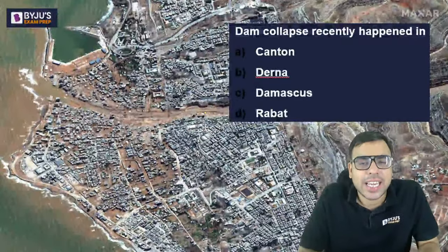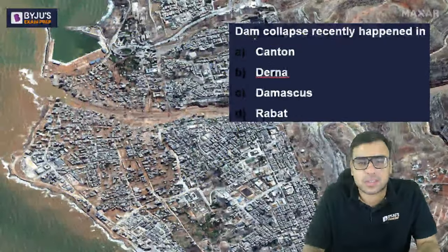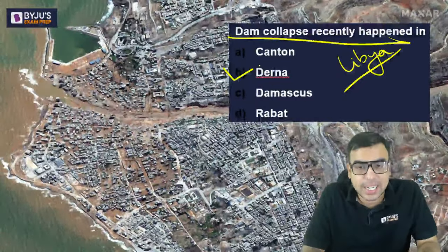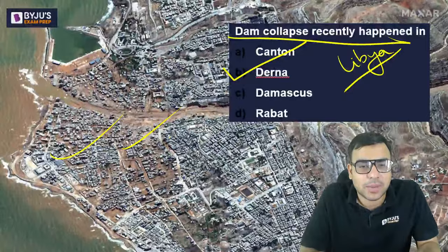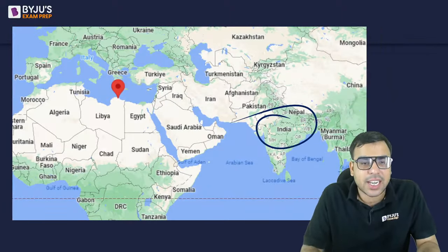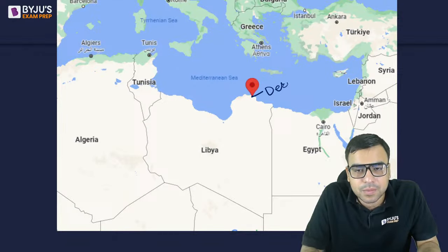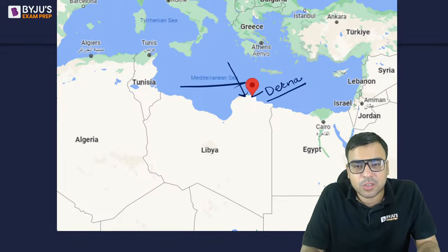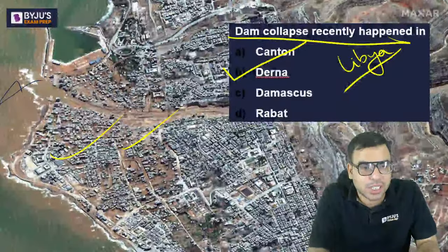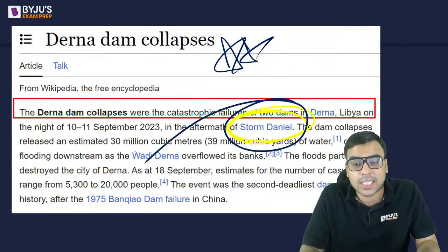A dam collapse recently happened in which city? Canton, Derna, Damascus, or Rabat? The right answer is B — Derna city in Libya. A storm called Daniel caused the dam collapse in Derna. Libya is in Africa on the Mediterranean coast. You should also know — they can ask which storm caused this event.